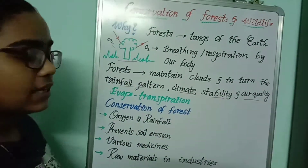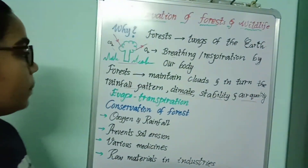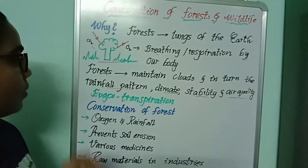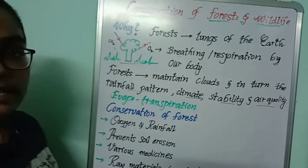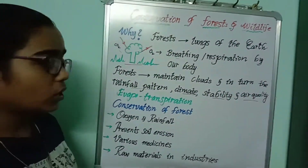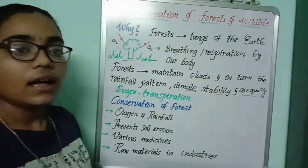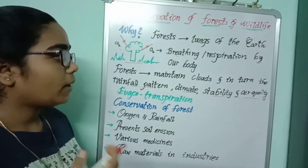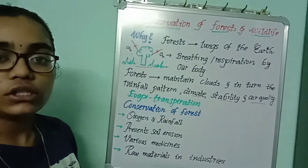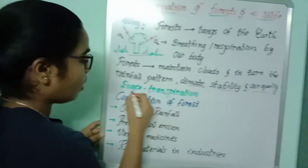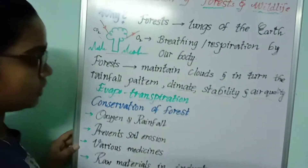How can forests help with rainfall? The trees present in forests absorb the water present in the soil and evaporate it in the process of transpiration. This is called evapotranspiration.